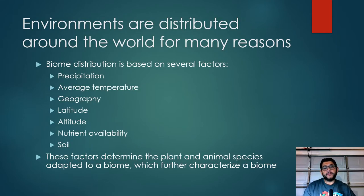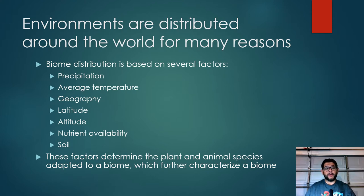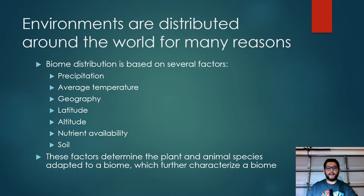Environments are distributed around the world for different reasons. Biome distribution is based on a couple of factors: precipitation or snow, average temperature, and geography — what the land is made of elevation-wise, like mountains and flatlands, what latitude it's at, what position on the planet it is, altitude depending on whether it's a mountain area or valley, and nutrient availability in the soil.